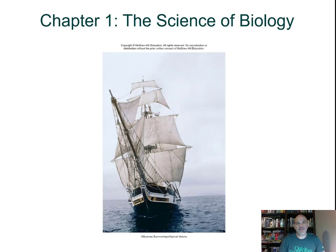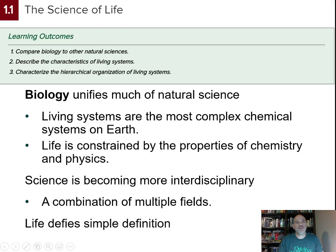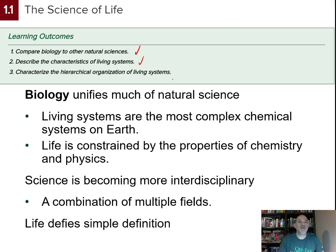This introductory chapter defines what biology is. The first section defines biology as the science of life. The learning outcomes include comparing biology to other natural sciences, describing the characteristics of living systems, and characterizing the hierarchy of organization.